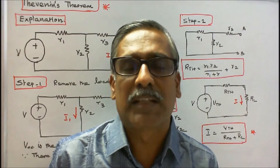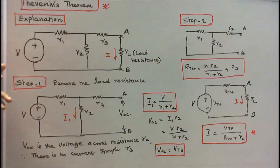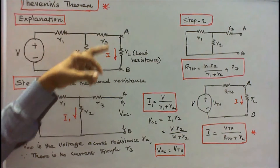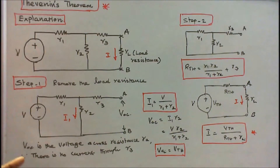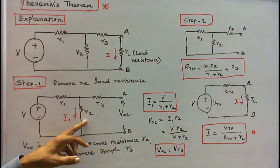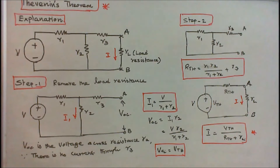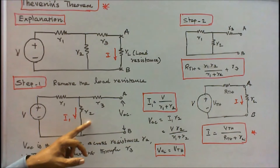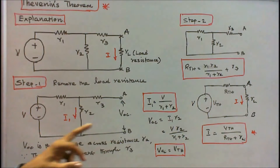Now we will see the explanation of Thevenin's theorem. We have a voltage source V, resistances R1, R2, and R3, and a load resistance connected across points A and B. To apply Thevenin's theorem, the first step is to remove the load resistance. The voltage across AB is equal to VOC, which is the voltage across resistance R2, since there is no current flowing through resistance R3. Therefore, I1 equals V divided by R1 plus R2.